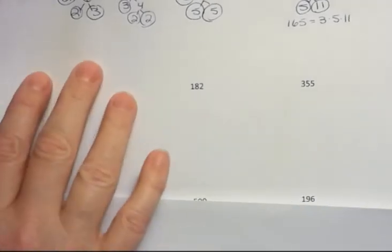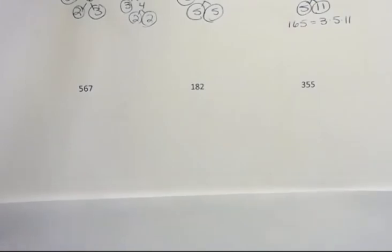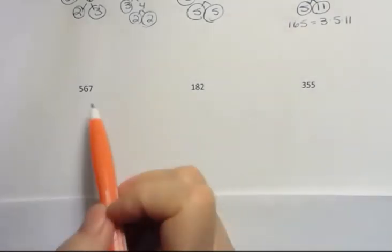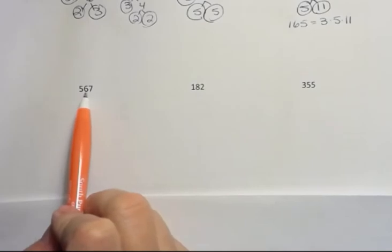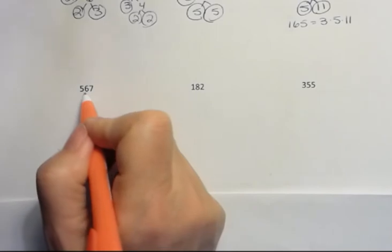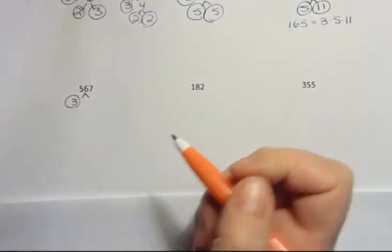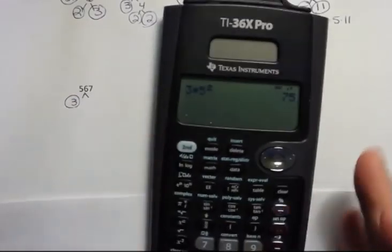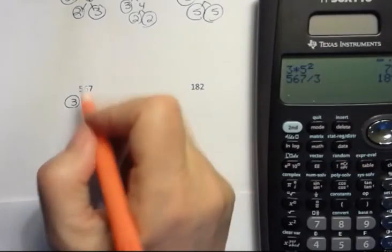567. Now my last mistake I made because I did the division in my head up there. So maybe you don't want to do that. Maybe I shouldn't do that either. Let's see. 7 and 6 is 13 plus 5 is 18. That's how I know that 3 will go into this number. 3 is on my list of prime numbers. But this time maybe I don't want to make that same mistake. So I'm going to go 567 divided by 3. And that's going to give me 189.